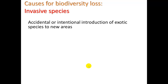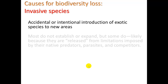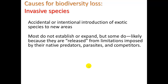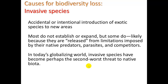Number two as a cause: invasive species — the accidental or intentional introduction of exotic species to new areas. Most introduced species do not establish or expand, maybe because it's not the right niche for them, but some do. Likely because they are released from limitations imposed by their native predators, parasites, and competitors — they're in a new area without those checks, so they are free to fill that niche more fully. In today's globalizing world, invasive species have become perhaps the second worst threat to native biota — biota being a term that includes all living things.